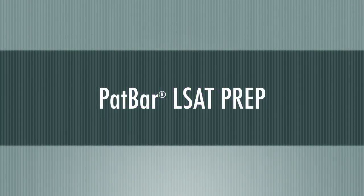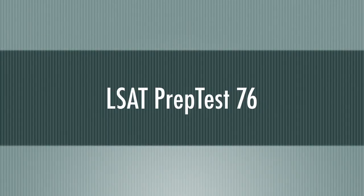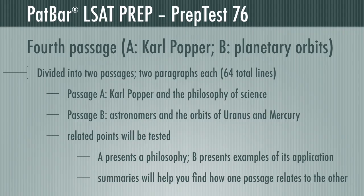Welcome back to PATBAR LSAT Prep. In this video, we present PrepTest 76, Section 1, Questions 20 through 27. This is the fourth passage in the Reading Comprehension section. This passage comprises 64 lines of text and is divided into Passage A and Passage B. Passage A introduces the reader to Karl Popper and the philosophy of science, specifically the power of negative evidence. Passage B gives two examples of how negative evidence came into play in predicting the orbit of Uranus and later of Mercury.